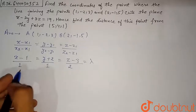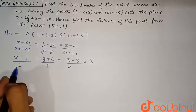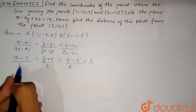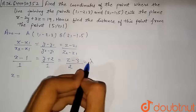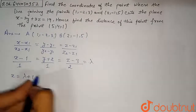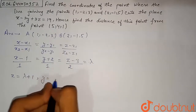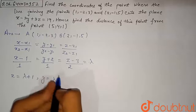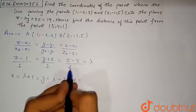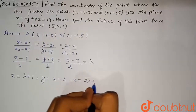We set each ratio equal to λ to find the general point on the line. So x = λ + 1, y = λ - 2, and z = 2λ + 3. Any point on this straight line can be represented using these parametric equations.